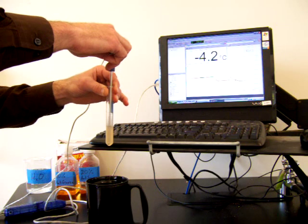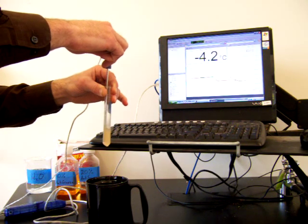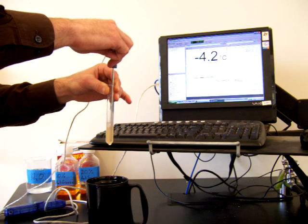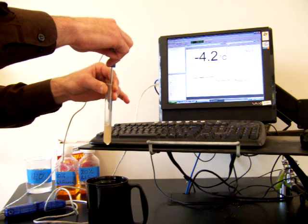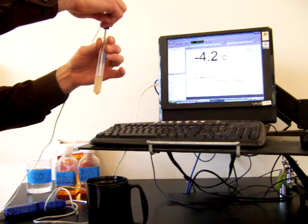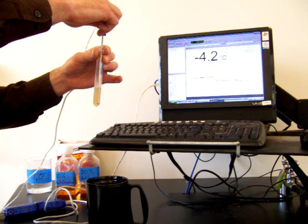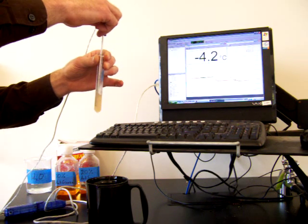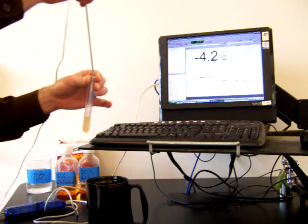So negative 4.1, negative 4.2, either one of those. Negative 4.1 or negative 4.2 is when the ice began to form. Okay, so we saw supercooling and then we saw the temperature level off as the antifreeze solution was changing from a liquid to a solid.